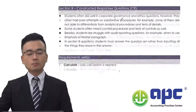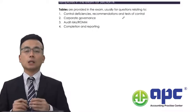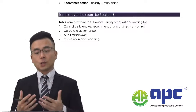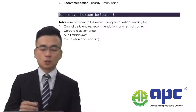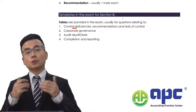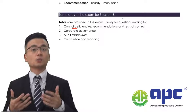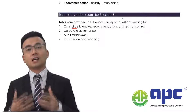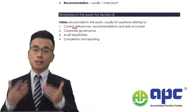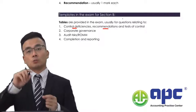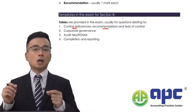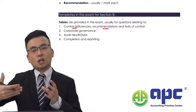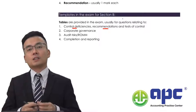In Section B, the examiner has a preference for certain types of questions. For example, you may be required to comment on the control deficiencies of a client's company. When auditing a client's entity, we may find fraudulent transactions occurring, and we then need to make a recommendation — for example, removing a staff member or advising the client's company to add extra staff to ensure that fraudulent activity is stopped.